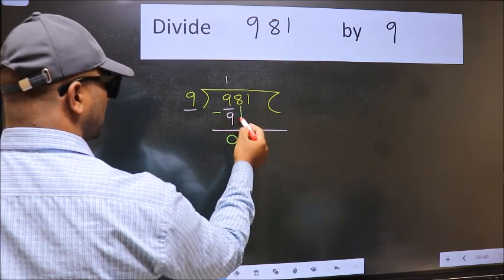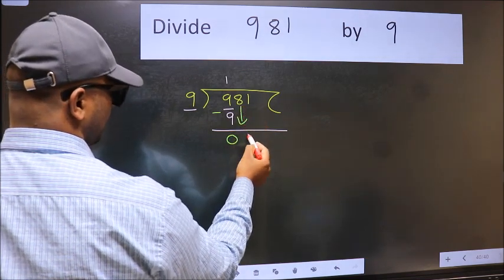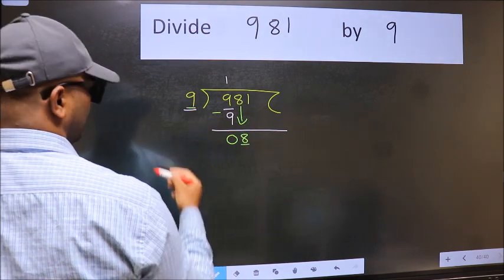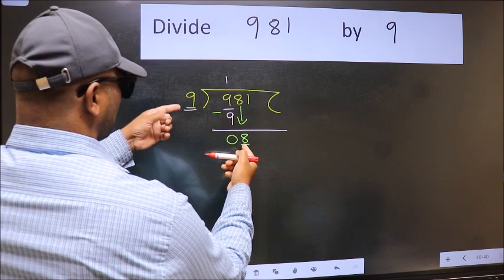After this, bring down the beside number. So 8 down. Now here we have 8 and here 9. 8 is smaller than 9.